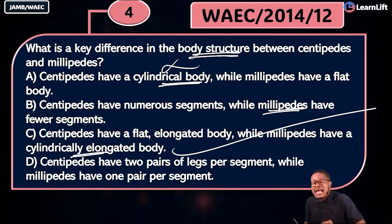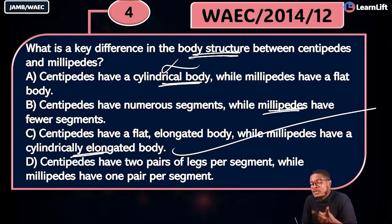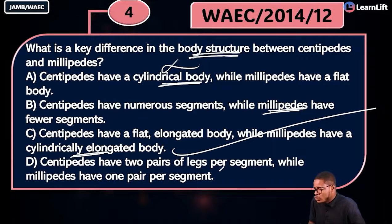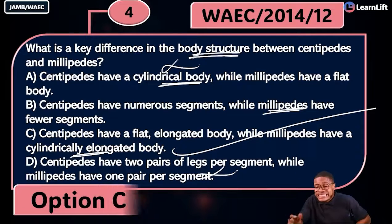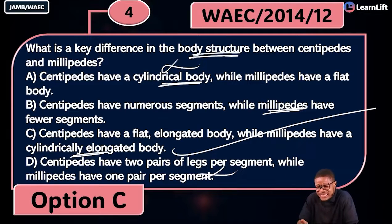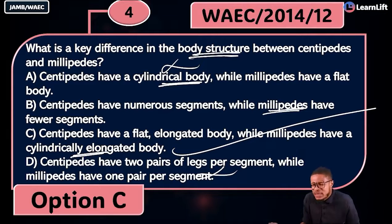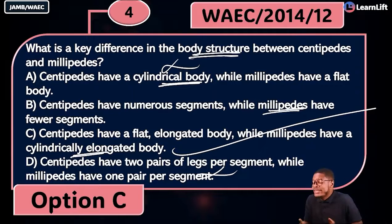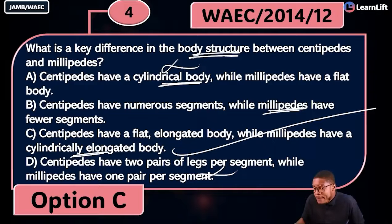Option D says centipedes have two pairs of legs per segment — that's not true; it's the millipedes that have two pairs of legs per segment. So option D is wrong. The correct answer is option C: centipedes have a flat elongated body while millipedes have a cylindrically elongated body.